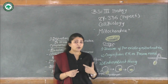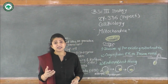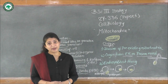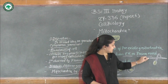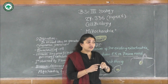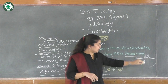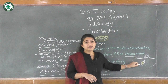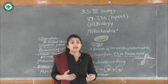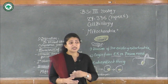The next theory proposed that mitochondria originated from organelles such as the endoplasmic reticulum or the plasma membrane. Scientists thought it may have evolved through an invagination of the plasma membrane or ER membrane into the cytoplasm, giving birth to the mitochondrial structure. However, there was no proof regarding this, and this theory was also not accepted.